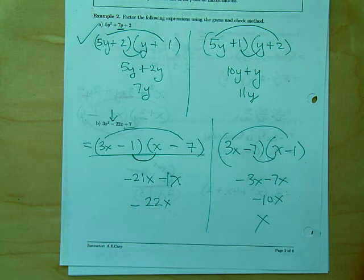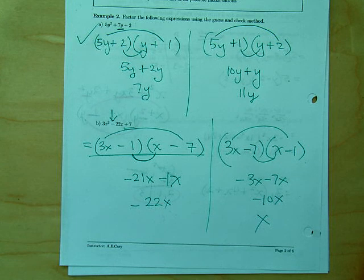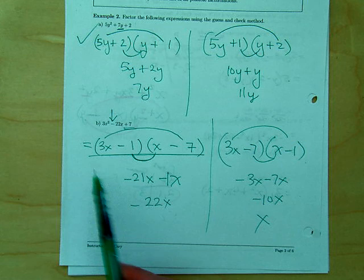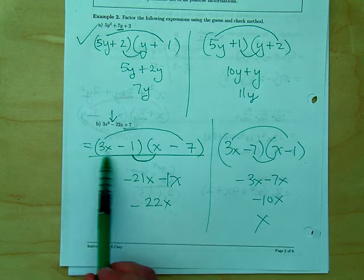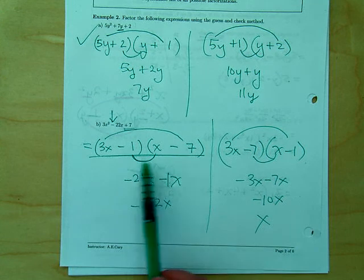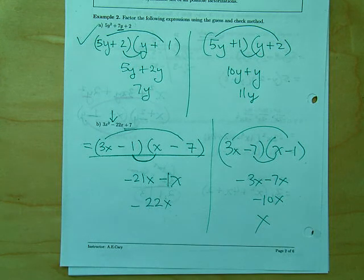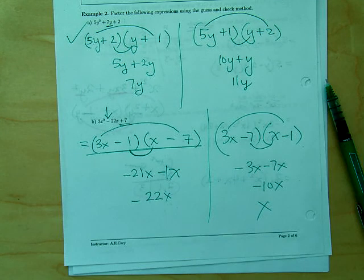That's guess and check — you're putting numbers in and checking to see if it works. A lot of times people ask, 'Is it the right answer? How do you check?' You FOIL it. We're saying: what two things multiply to give the first term? What two things multiply to give the last? Then check the middle. In the next video we will learn another method.